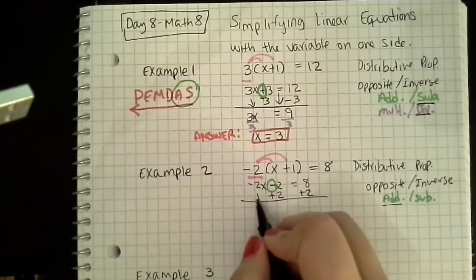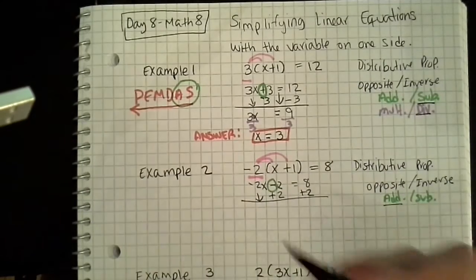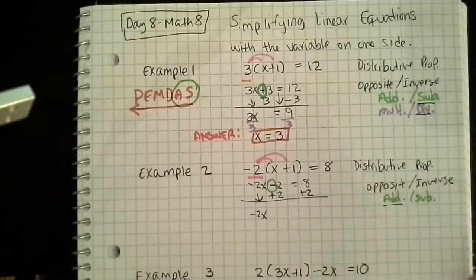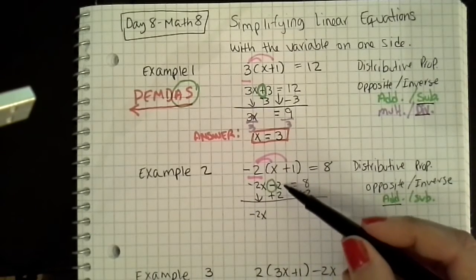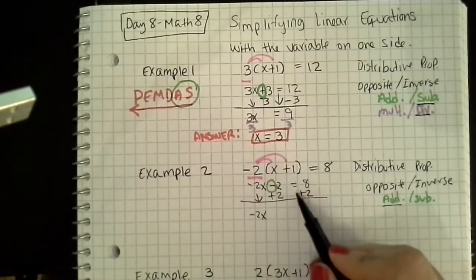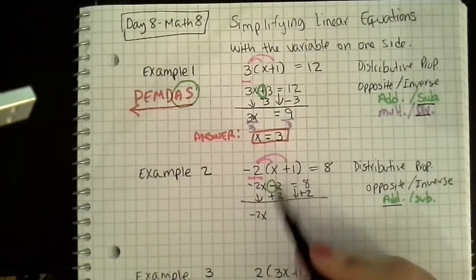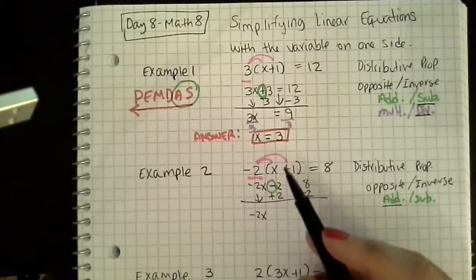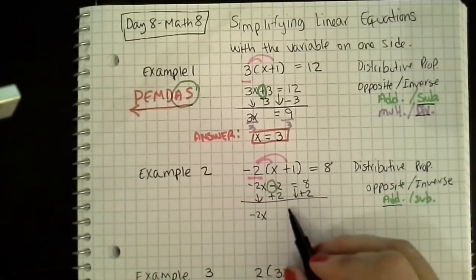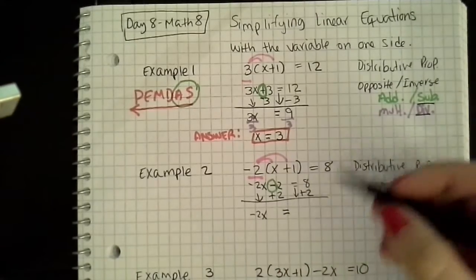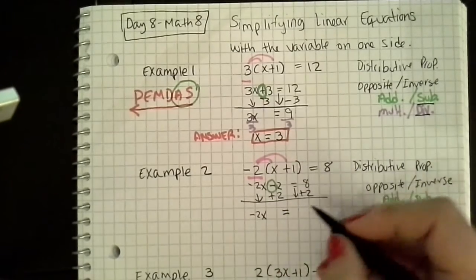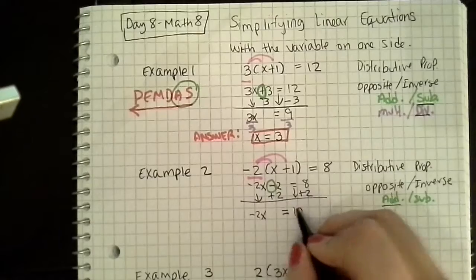Didn't do anything to the negative 2x, so I'm going to bring that down. Negative 2 plus 2 is 0. You're always going to get 0 if you're doing this, because that's the goal. So I'm going to bring the equal sign down. 8 plus 2 is 10.